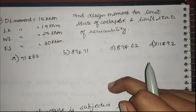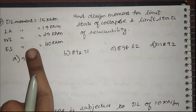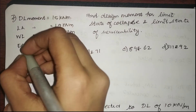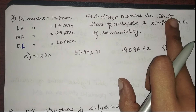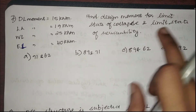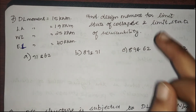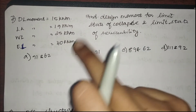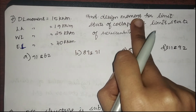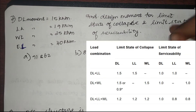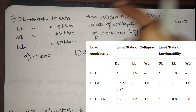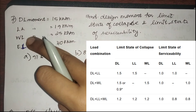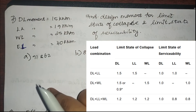This next question is quite tricky. They have given dead load moment, live load moment, wind load, and earthquake load, and have asked to find the design moment for both limit state of collapse and limit state of serviceability. You have to go back to the table. In that table we have three load combinations: dead load plus live load; dead load plus wind load; and dead load plus live load plus wind load. Since dead load, live load, and wind load are all given, we look into the third category.